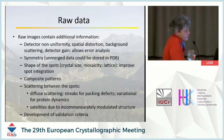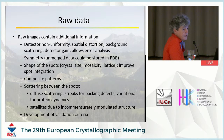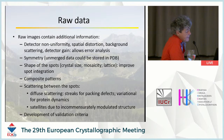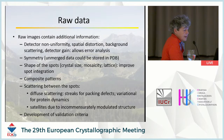John also mentioned the symmetry issue: the researcher decides that the reciprocal lattice has a certain symmetry, merges the data accordingly, and proceeds with structure determination. There is now an initiative to store unmerged data so that later people can still verify whether the symmetry choice was correct or not.